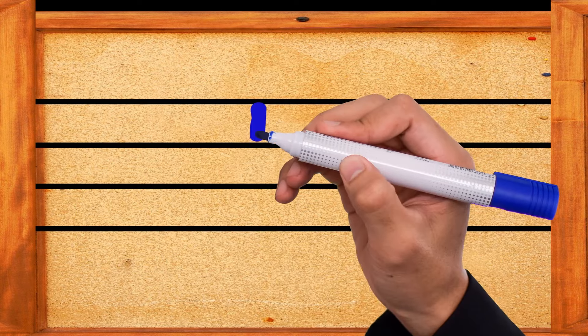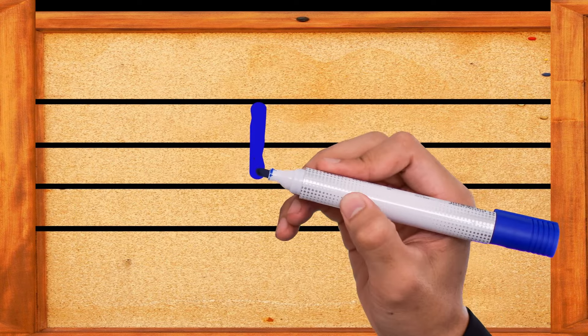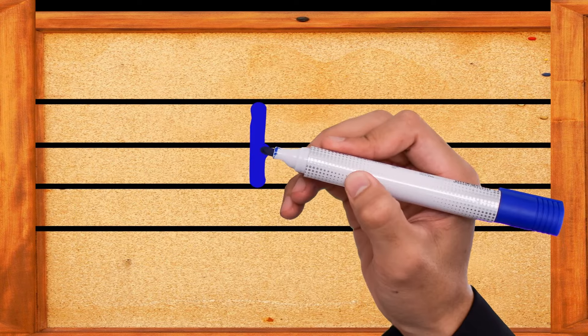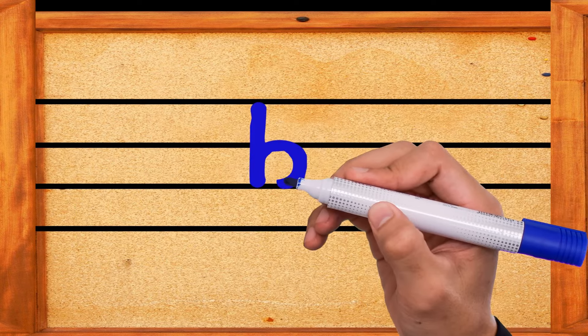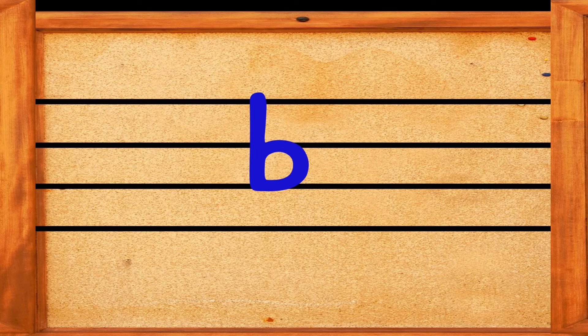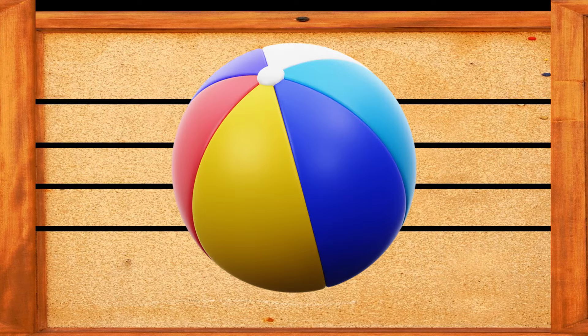Come down and down, then go up and make a small curve. This is the letter B. B is for ball.